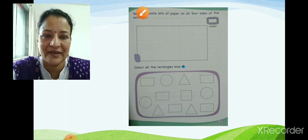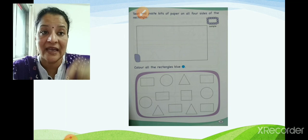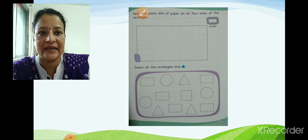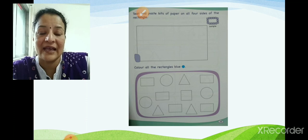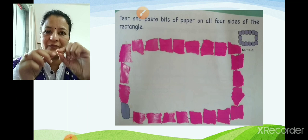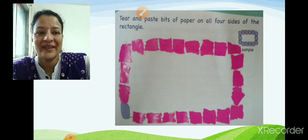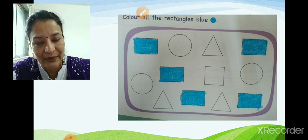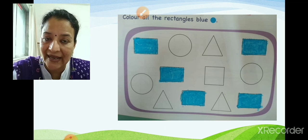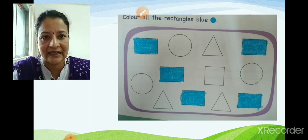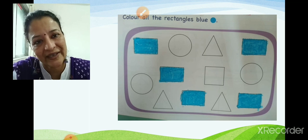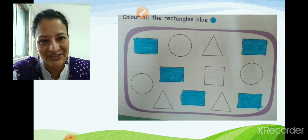Very good. We will move to the next page. Now children, what have they asked us to do? Here, we have to tear and paste bits of paper on all the four sides of the rectangle. Teacher has already done this — you tear small bits of paper and paste on all the sides of the rectangle. You can take any color. Next, color all the rectangles blue. We can see there is a circle, there is a triangle, and a rectangle — so we will pick out only the rectangles and color them blue. Teacher has already done it, children — you do it very slowly and neatly.